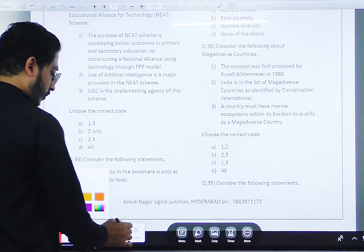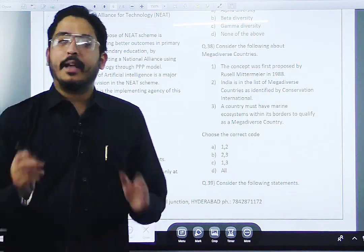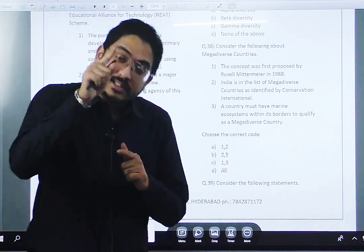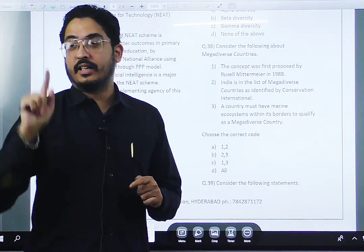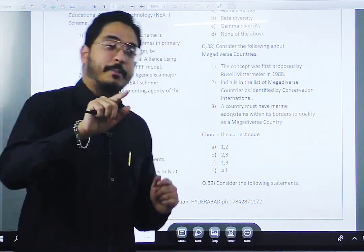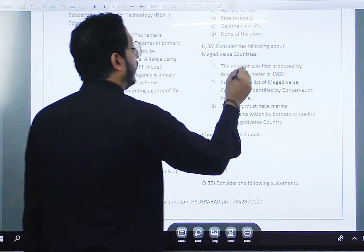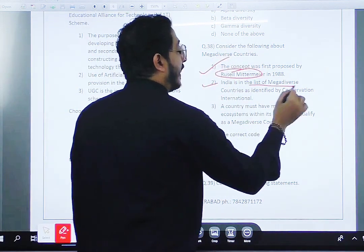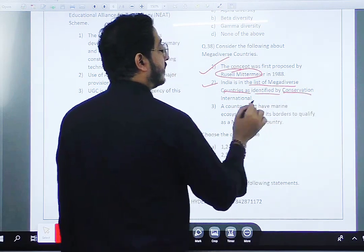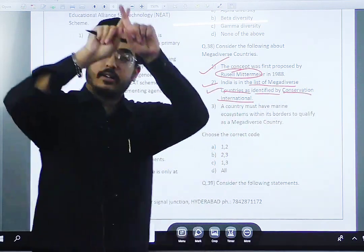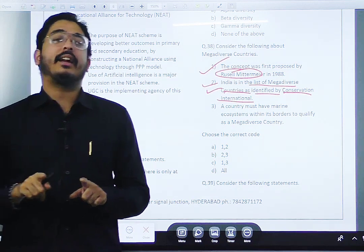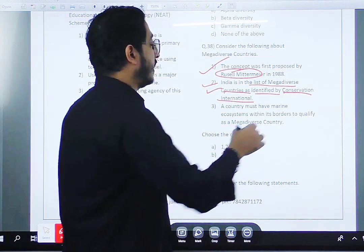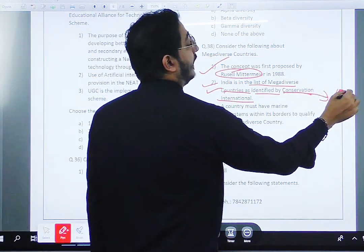I told you two days back we covered this, right? Mega diverse countries are recognized by Conservation International, but the concept was first proposed by this guy. India is in the list of mega diverse countries identified by Conservation International. It is a 1987 NGO, an international NGO with headquarters in Virginia.